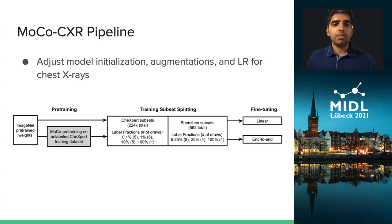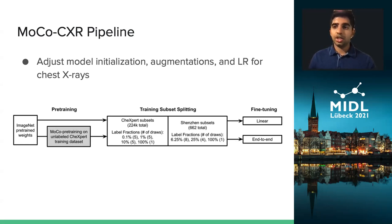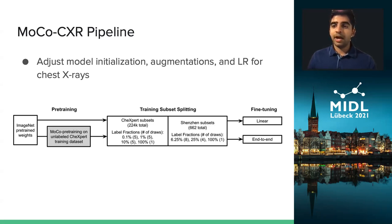Our MOCO CXR pipeline first begins with an adaptation of the MOCO method to chest x-rays. MOCO was developed for and applied to natural images, so it's not obvious at all that this method will work for chest x-rays. We had to adapt and adjust the model initialization for the pre-training step and choose augmentations of the images that were clinically relevant.